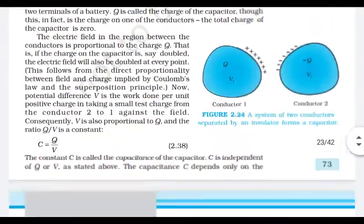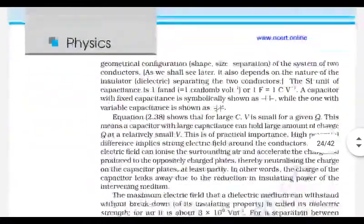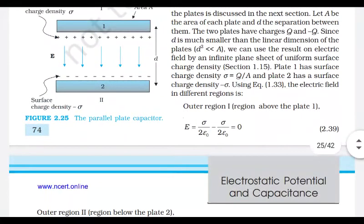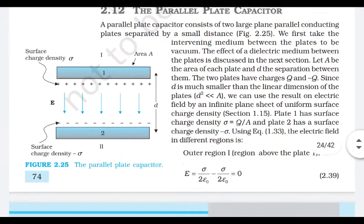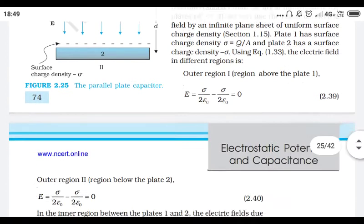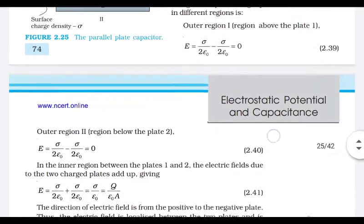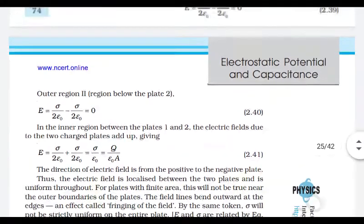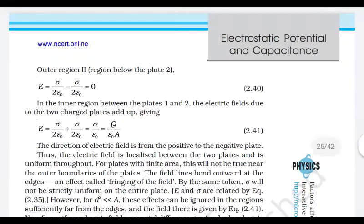The electric field in the outer regions is zero. In the inner region the fields add: E = E₁ + E₂. Since both plates have the same charge density sigma, we get E = σ/(2ε₀) + σ/(2ε₀) = σ/ε₀.